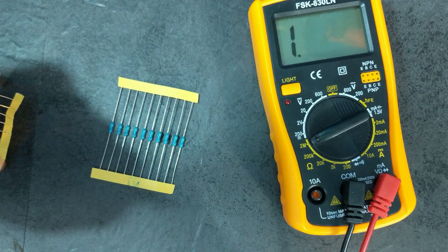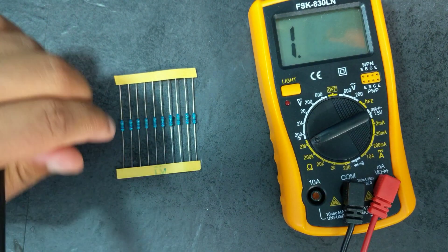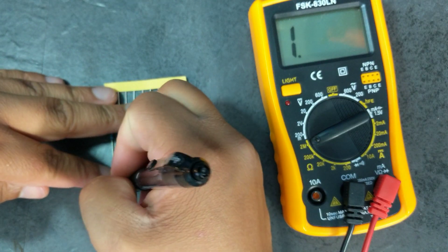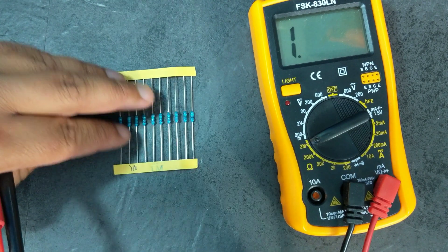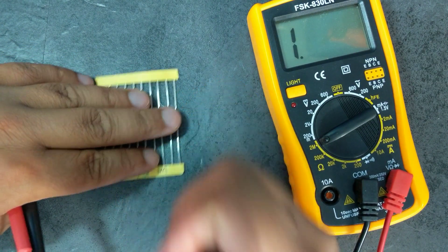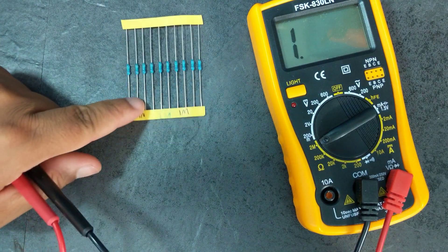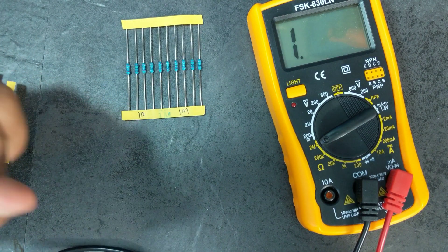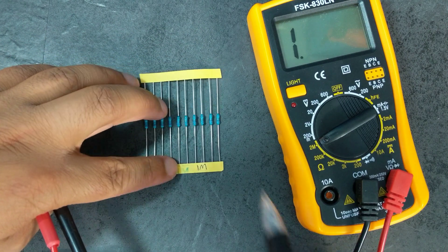And there you go, 0.994 million ohms, basically as it says here 1 million. So you just put one, and that's literally how I deal with my resistors. I don't bother learning the color codes and stuff like that.